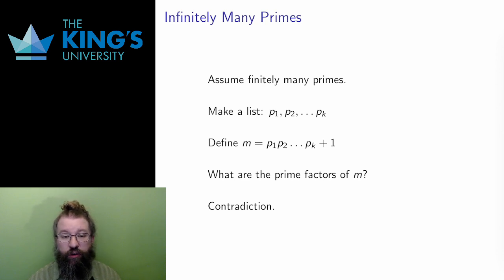Step 3: State the contradiction. The number m must have prime factors, but cannot have prime factors, since none of the primes are factors. This is a contradiction. The number must have prime factors, but in fact has none.